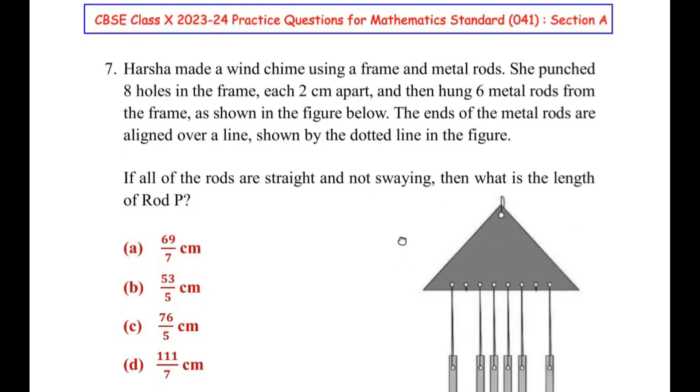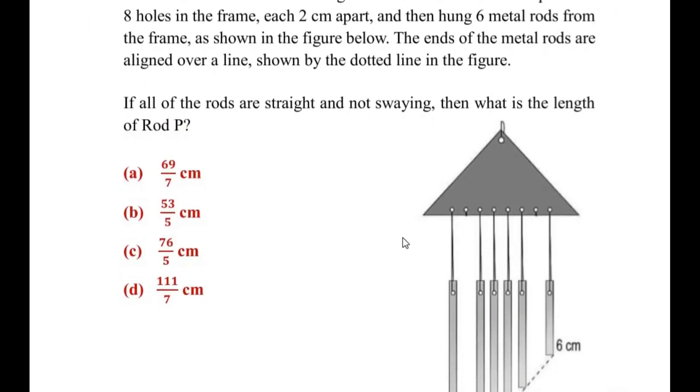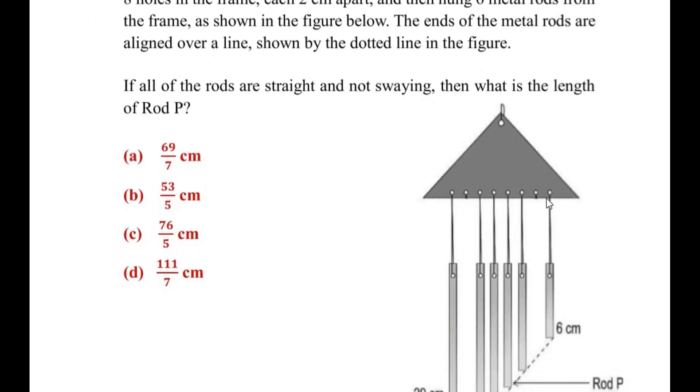Now here we can see that this triangle shape is the frame and Harsha punched 8 holes in this frame: 1, 2, 3, 4, 5, 6, 7, 8, and the distance between each hole is 2 cm.